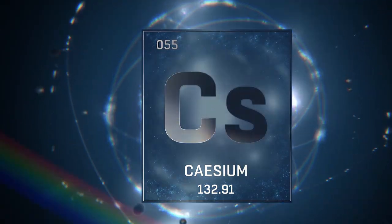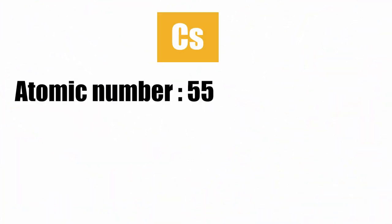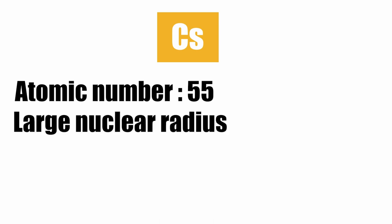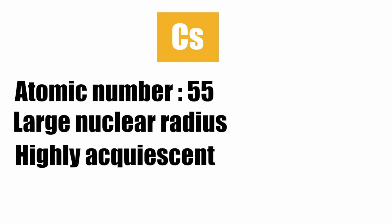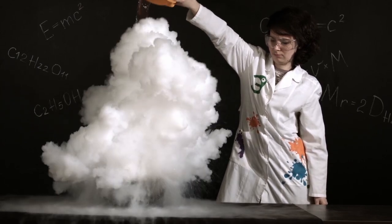The most reactive metal is cesium, a gold-colored metal that reacts explosively with air and water. Its atomic number is 55. Its large nuclear radius renders its nuclear pull ineffective and makes it awfully clumsy. It is highly acquiescent and readily gives up the single electron in its valence shell to attain stability, making it highly reactive.